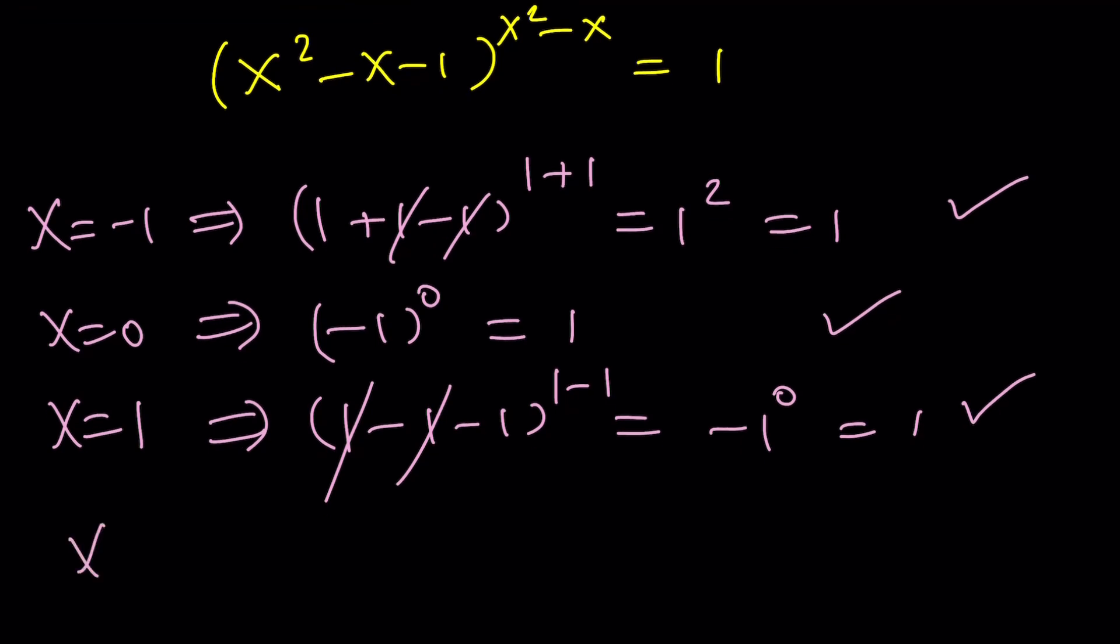And x equals 2 is going to give us 4 minus 2 minus 1 to the power 4 minus 2. This is 2 minus 1, which is 1. 1 to the power 2 is also 1. And that would give us basically, oh by the way, I forgot to put this in parentheses. It does matter because then otherwise it will be negative 1. So this works as well. So it looks like all the solutions are working. They're all valid. Do you agree?